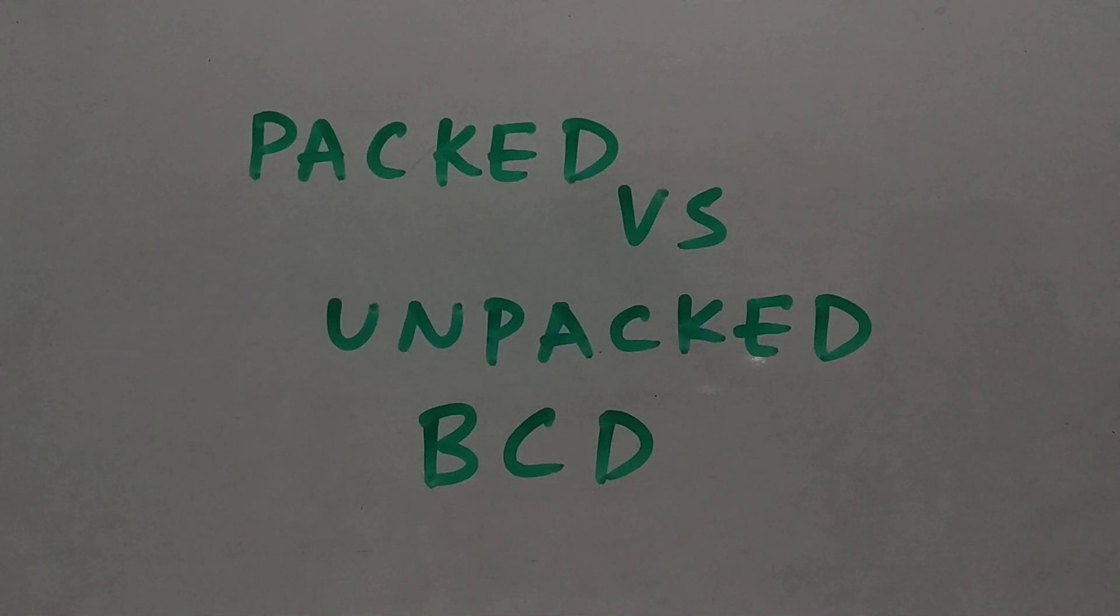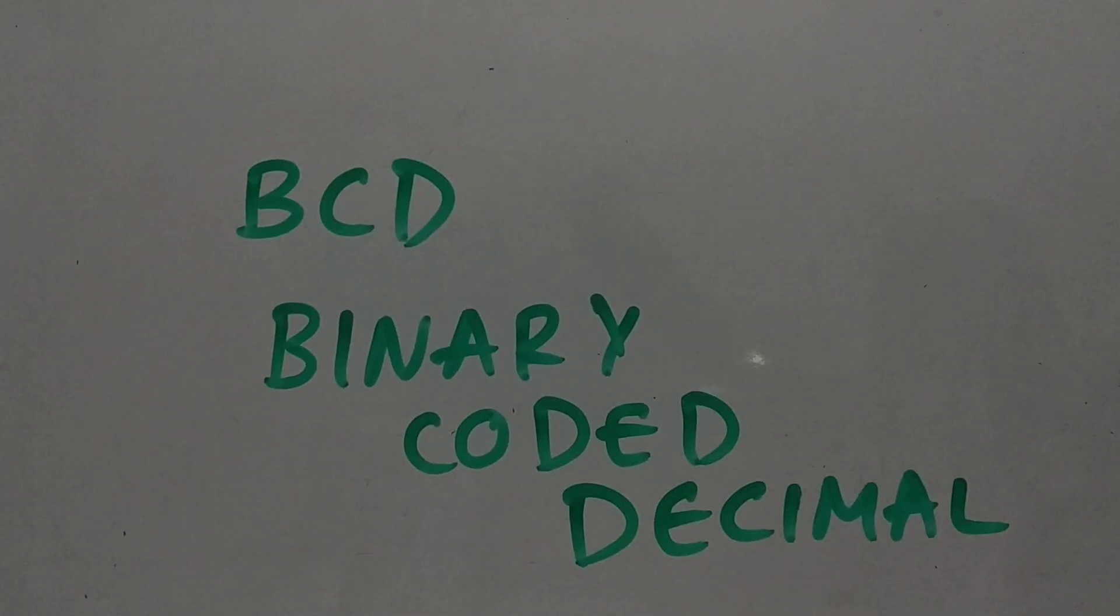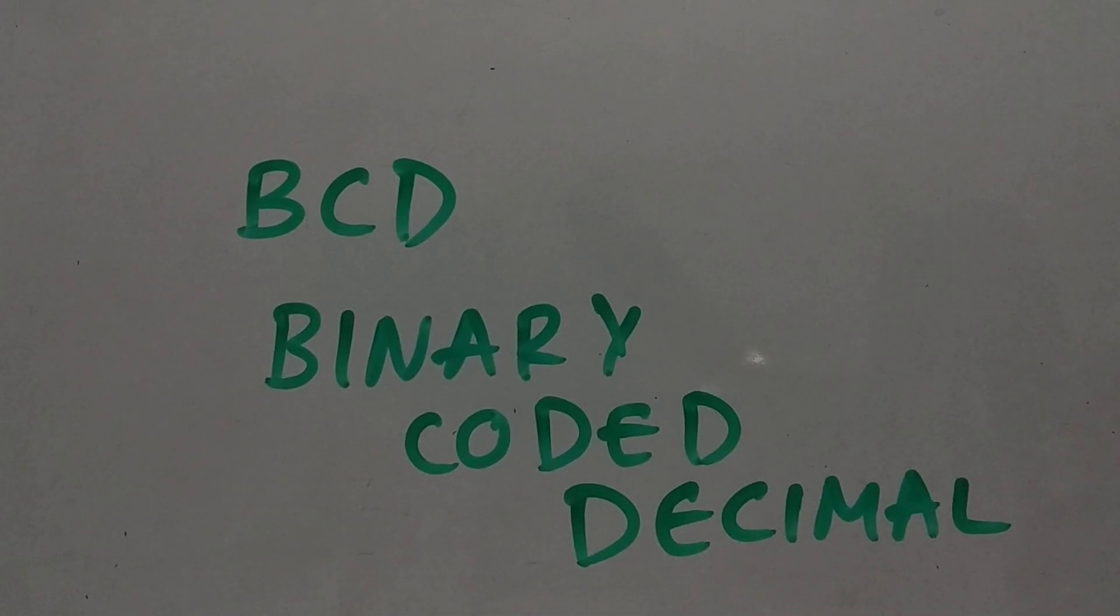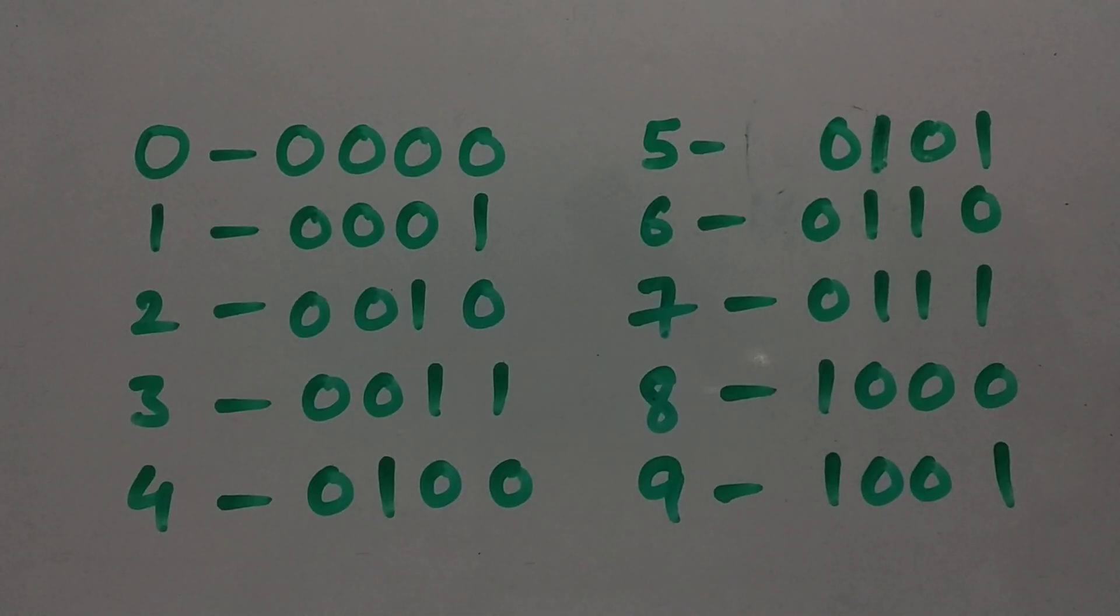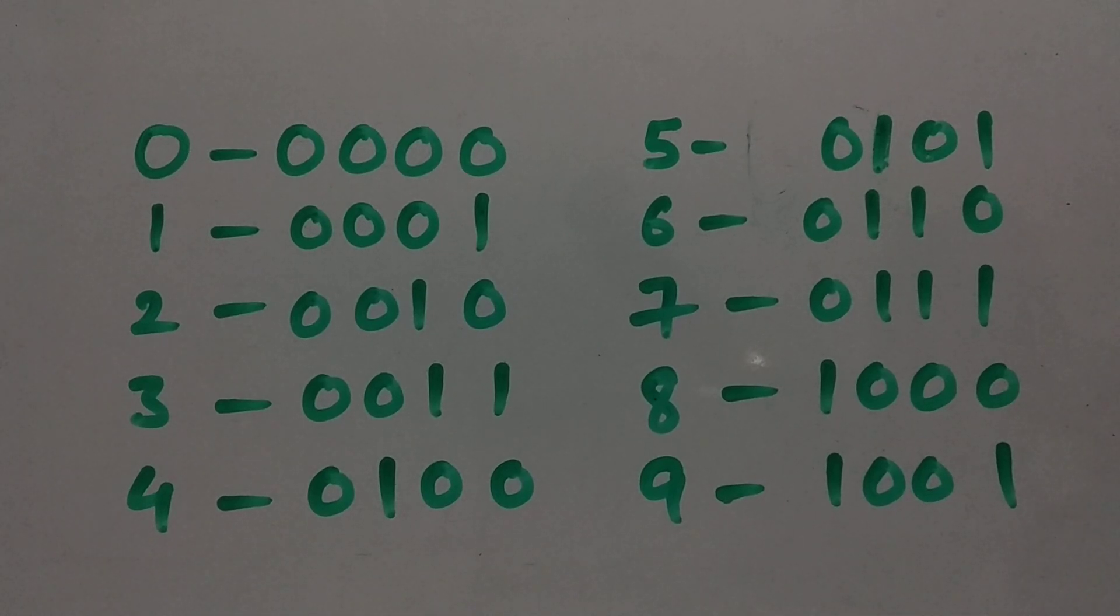Hey guys, welcome back to another interesting topic. Today's topic is about packed versus unpacked BCD. So what's packed BCD and unpacked BCD? As you know, BCD is binary coded decimal, where decimal digits from 0 to 9 are represented in binary form using 4 bits.